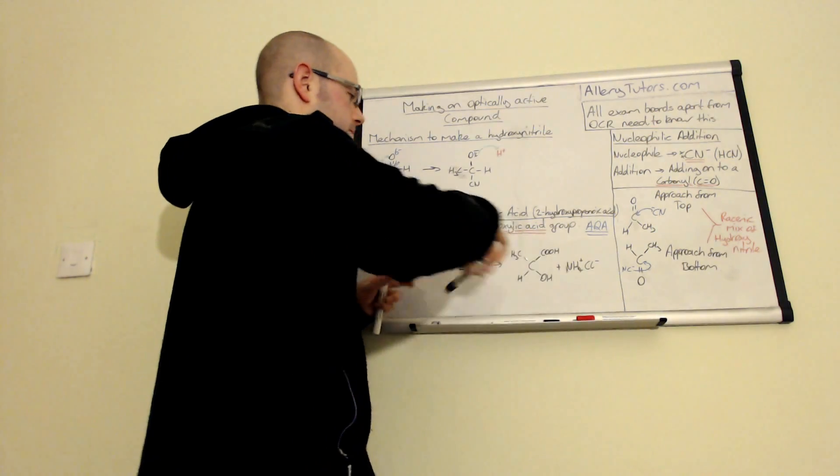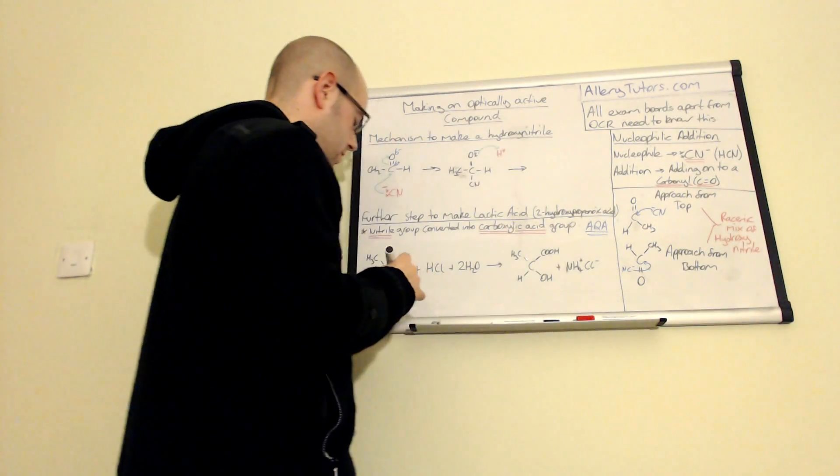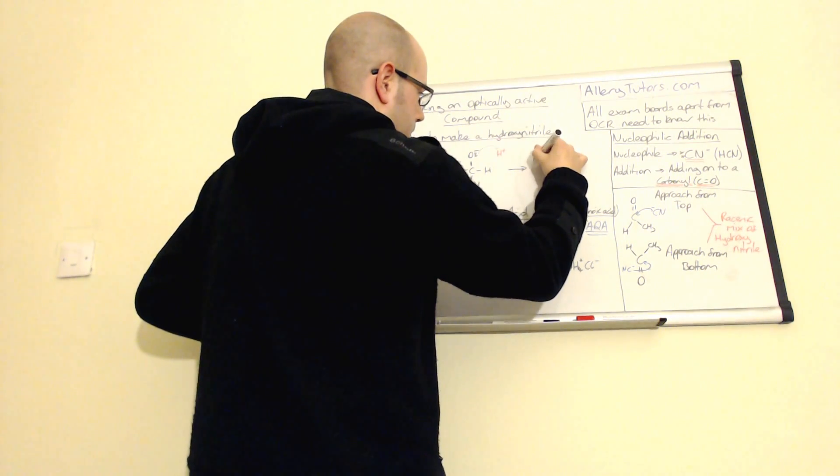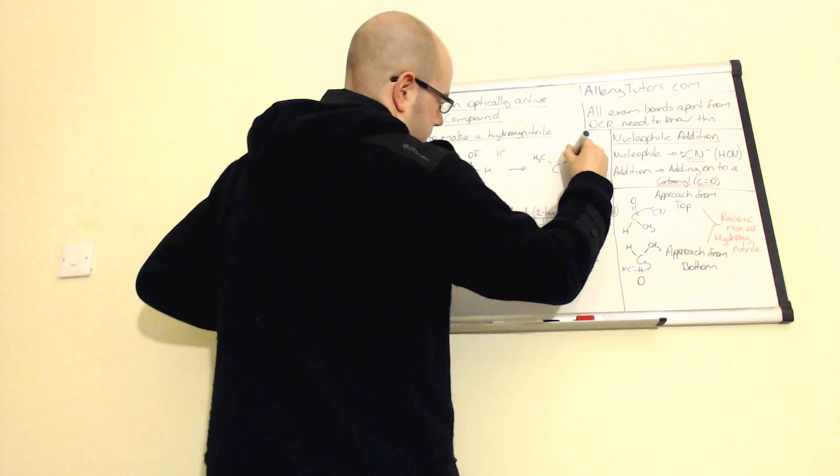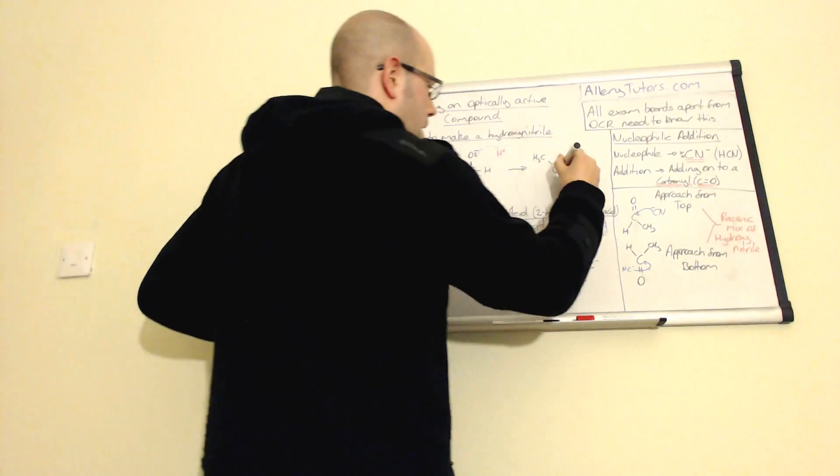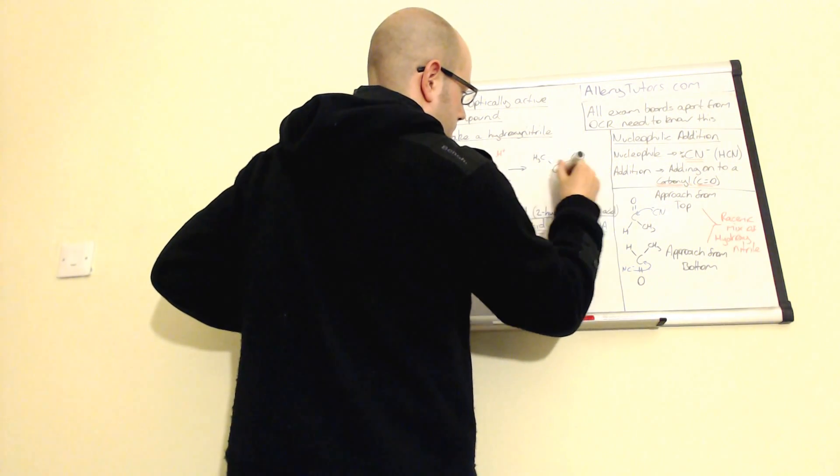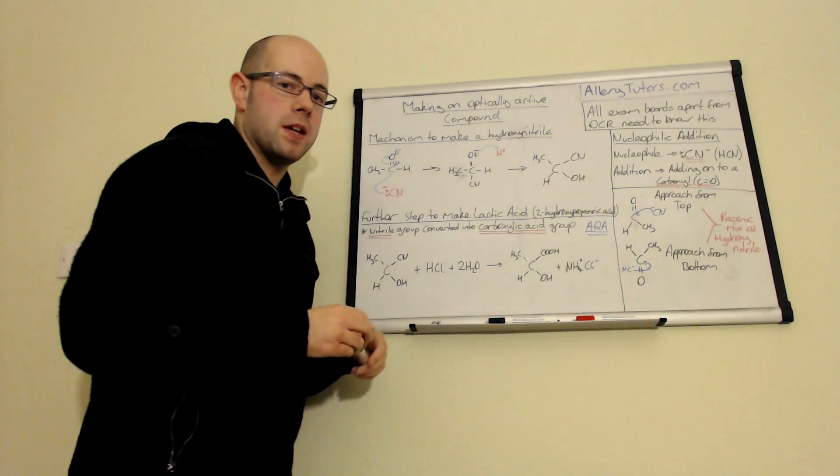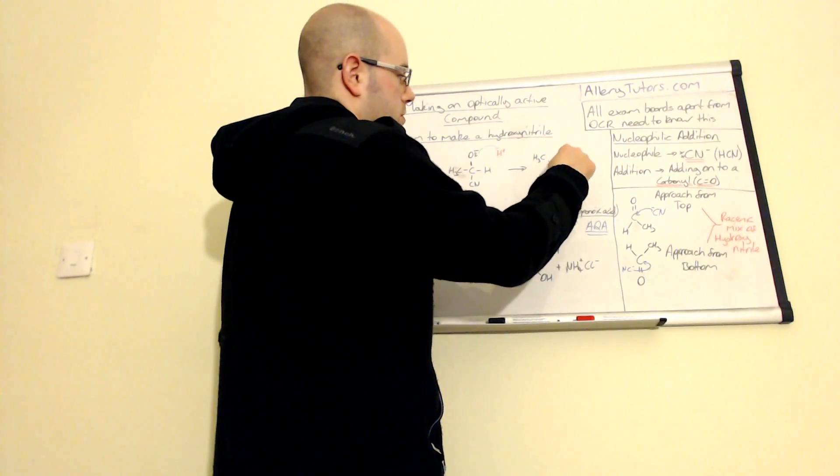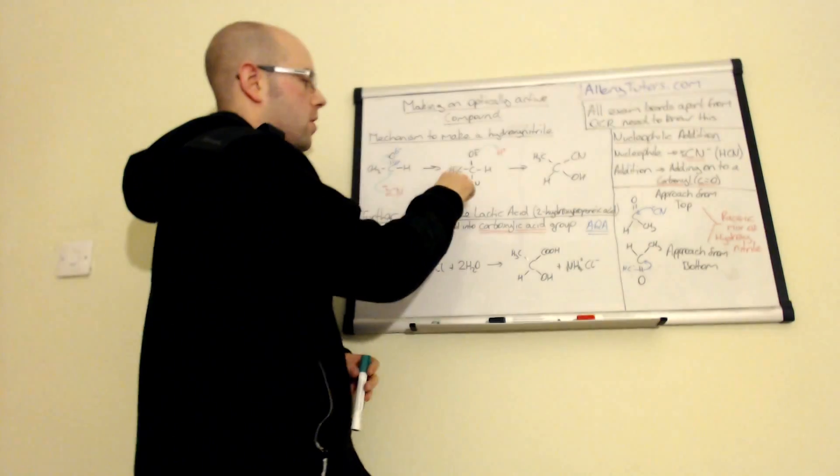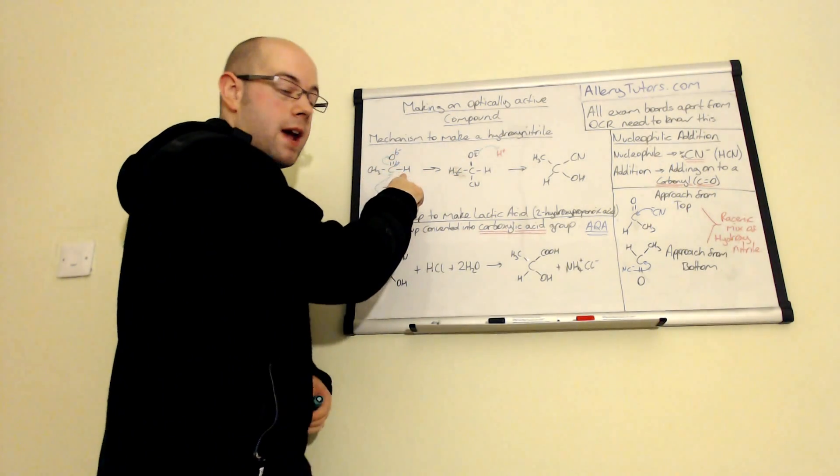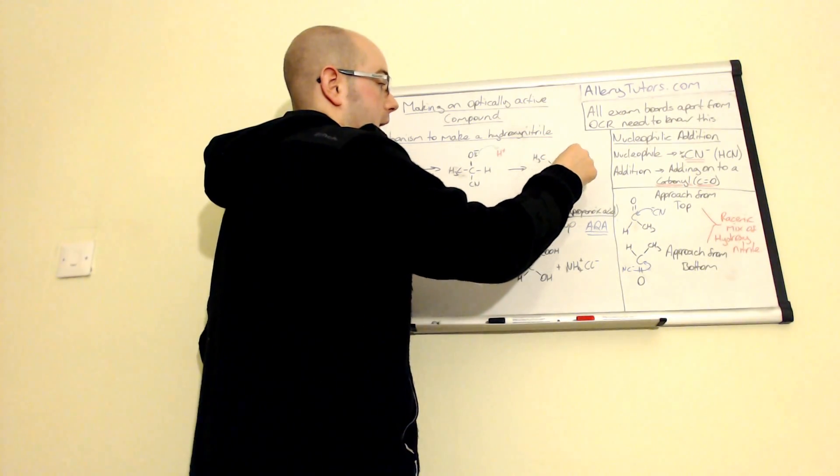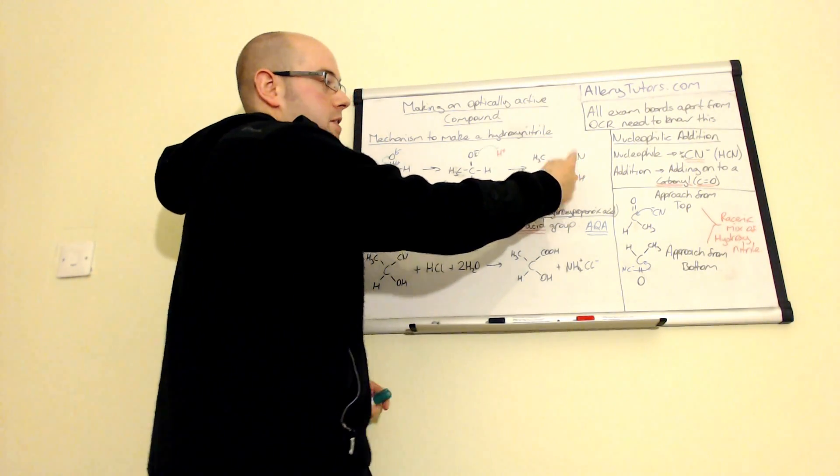And what we'll do is we'll write down our product. So our product is effectively this. So we have your CH3 which goes there. CN which will go onto there. OH and then H. And this you need to be able to name it as well. Now you can see here that we have one, two, three carbons now. When we started we started off with ethanal which is an aldehyde. We now have three carbon. One, two and that one which has just been added from our cyanide.